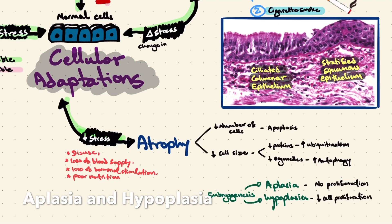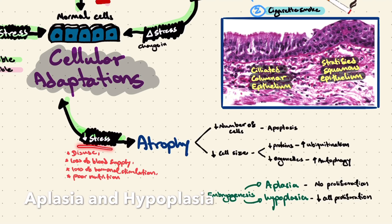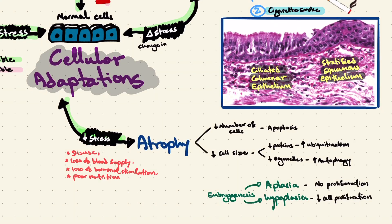Two more processes related to a reduction in stress occur during embryogenesis. Firstly, we have aplasia, meaning no proliferation, and hypoplasia, meaning reduced cell proliferation. For example, renal aplasia means one kidney was not developed at all, while renal hypoplasia means one kidney is underdeveloped.